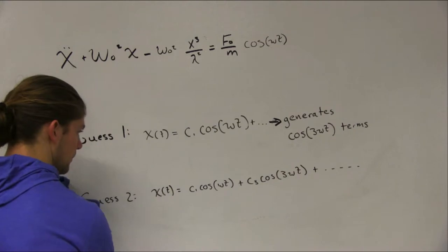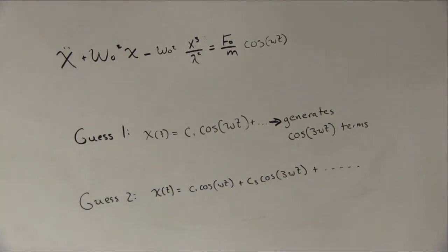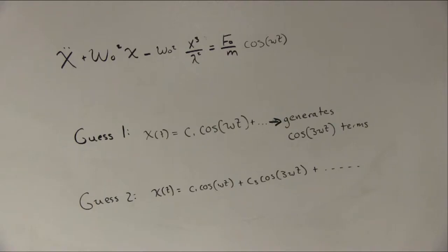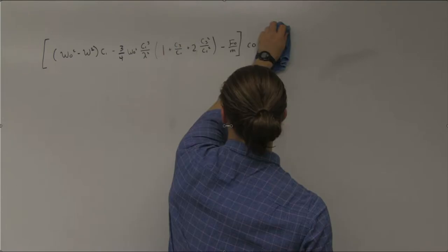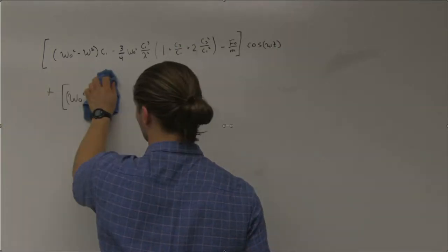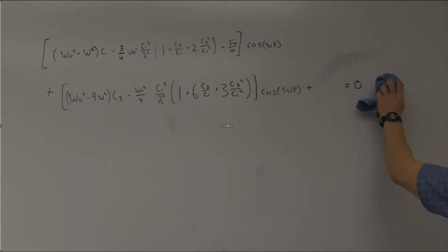Our second guess will then be of the form C1 cosine of omega t plus C3 cosine of 3 omega t. If we substitute our second guess into the undamped Duffing equation, we get the following result, where the ellipses indicate the cosine of 5 omega t, cosine of 7 omega t, and the cosine of 9 omega t terms, which are again generated by the non-linearity.